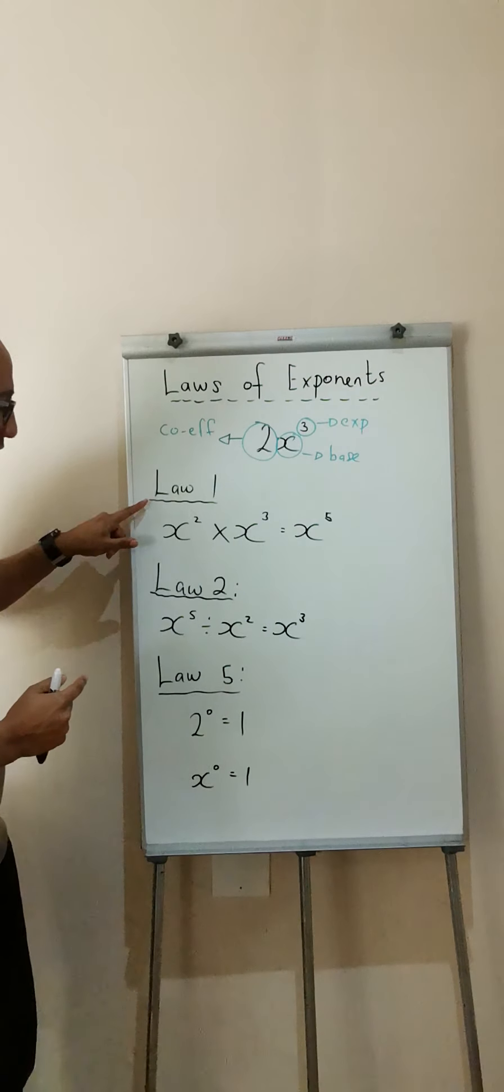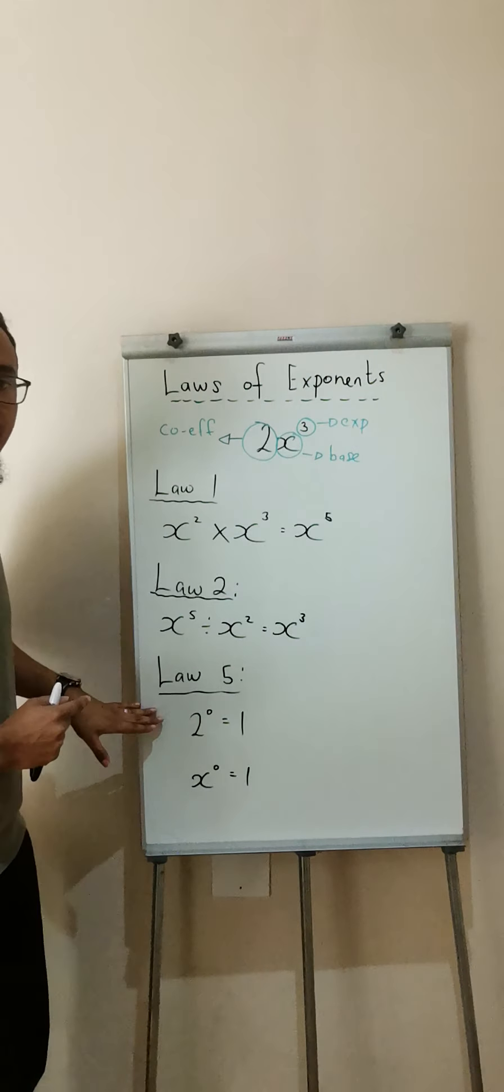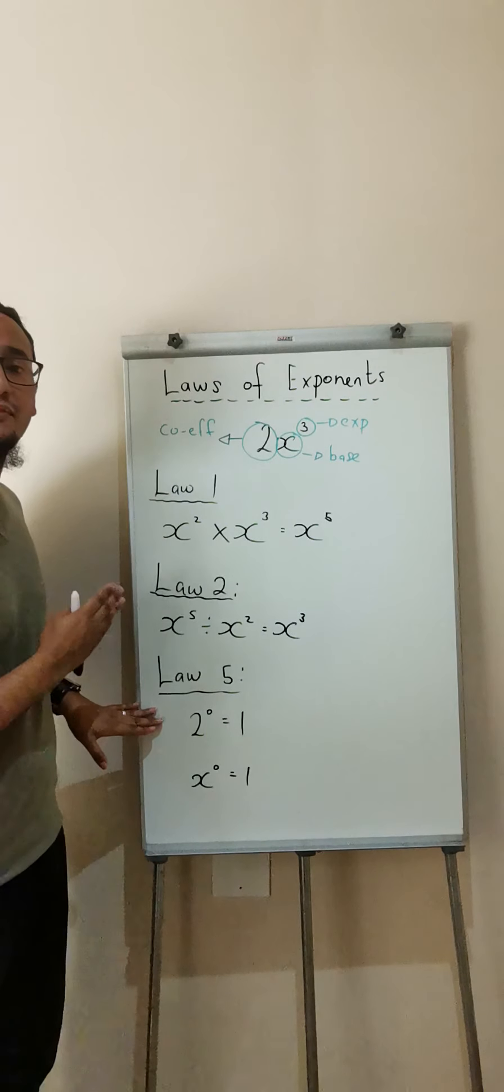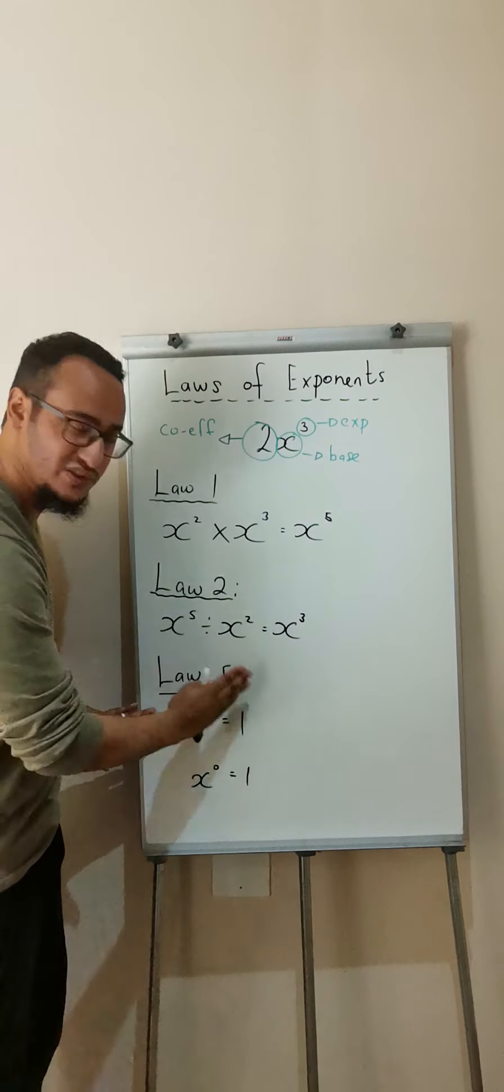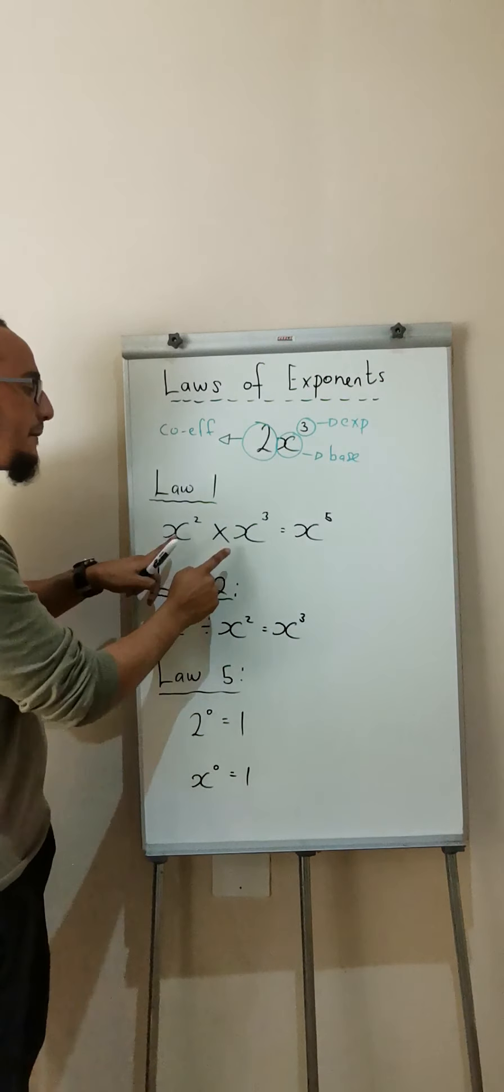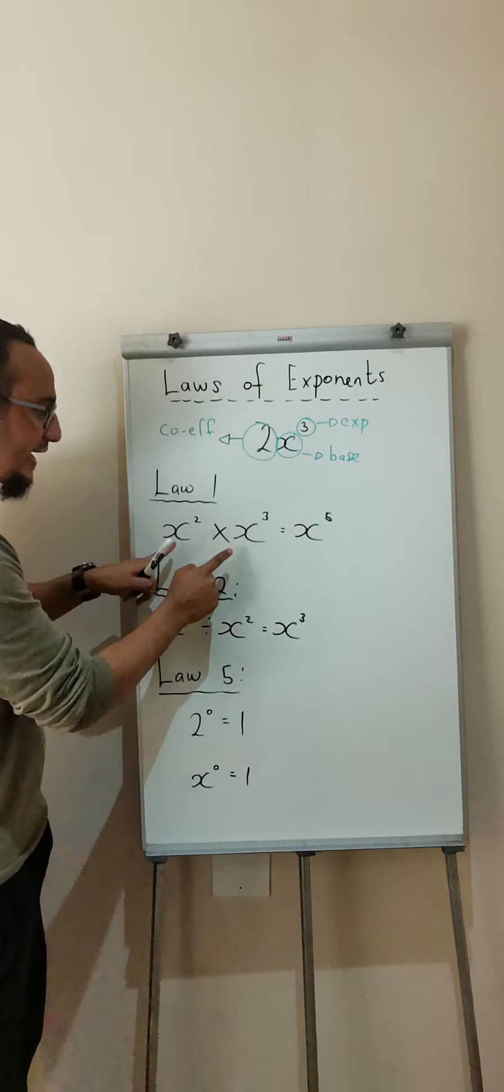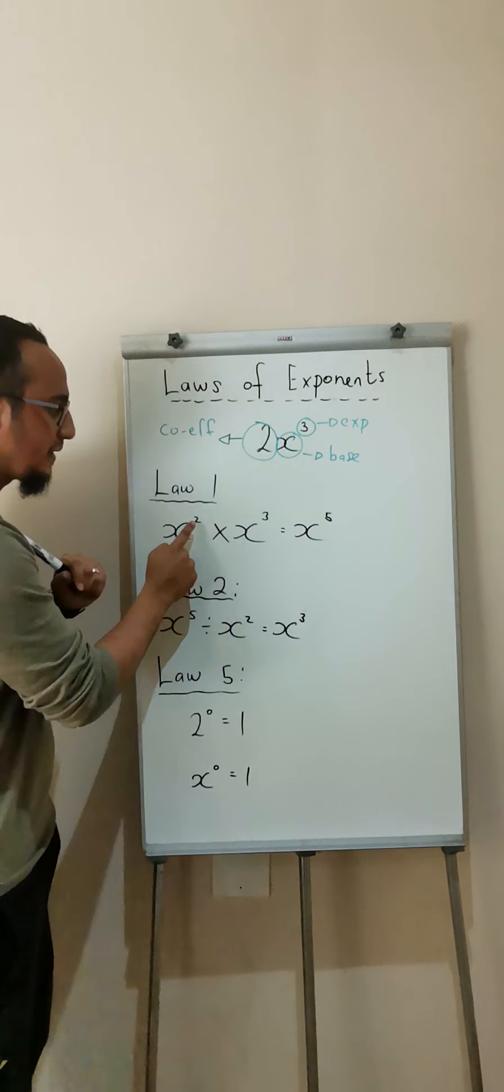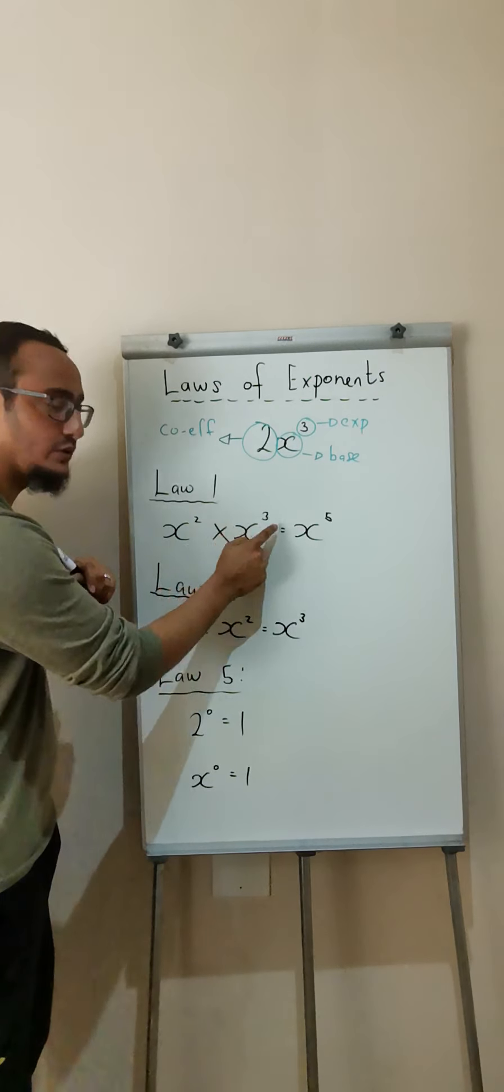Okay, I have law number 1, law number 2, and law number 5. The reason I have law number 5 over there is because it's the easiest law out of the 6. Okay, so law number 1 is when I'm multiplying and I have the same base, my exponents will add with one another.